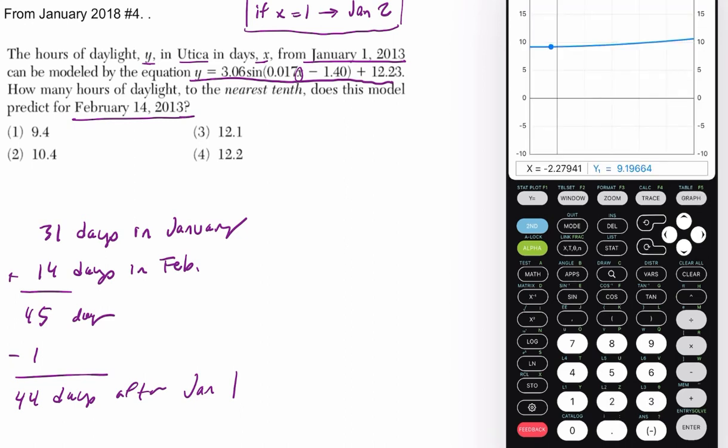You might get a flat line. If that's the case, it's not wrong. It's just that if you look at the coefficient of X, it's 0.017. So we get that number.